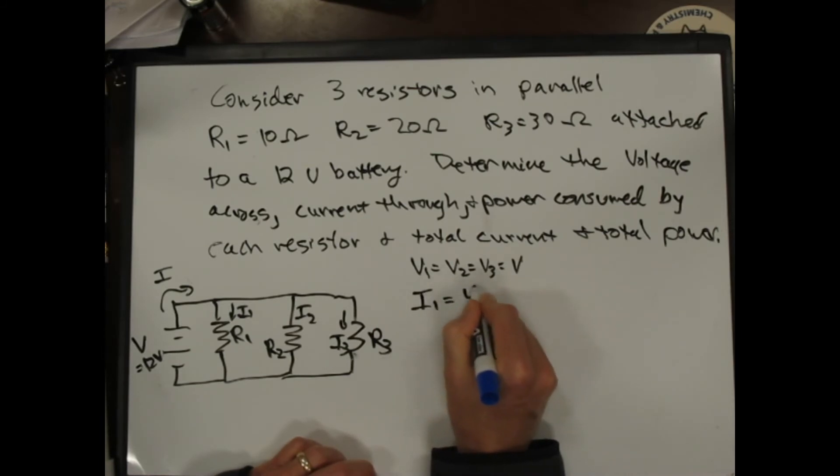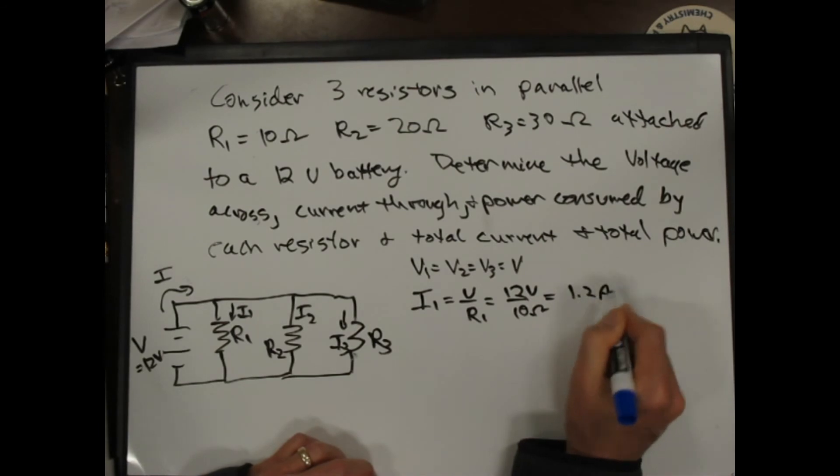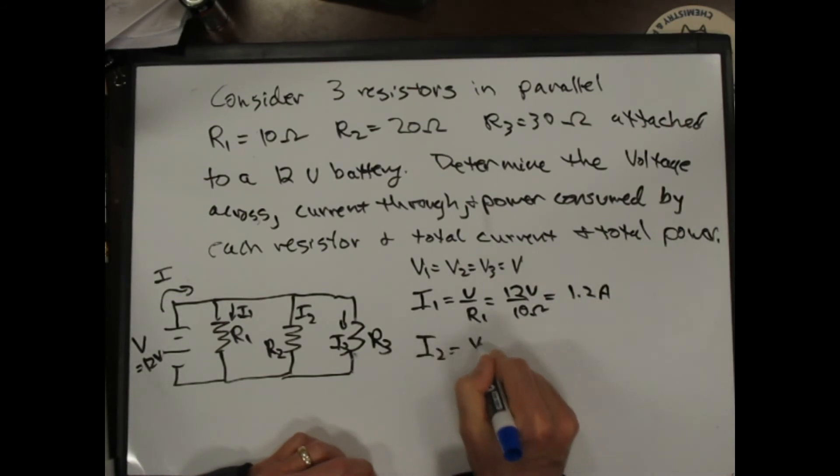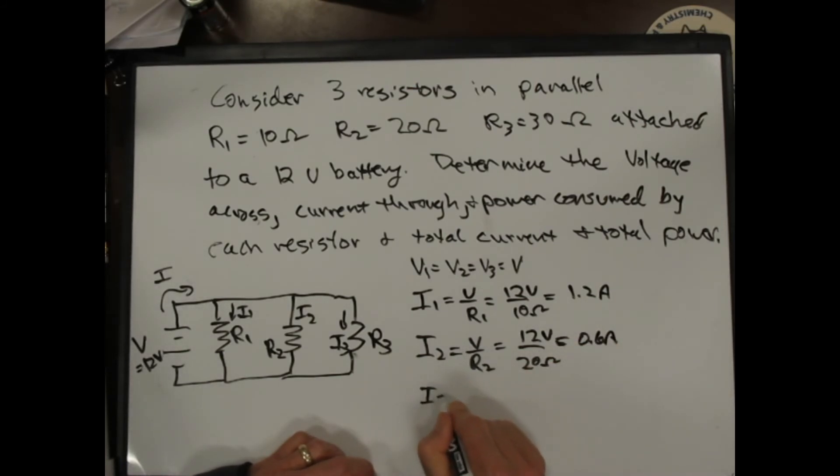I1 is equal to V over R1. That's 12 volts over 10 ohms, which is 1.2 amps. Similarly, I2 is equal to V over R2, which is 12 volts over 20 ohms, which is 0.6 amps. And finally, I3, which is V over R3, is 12 volts over 30 ohms, which is 0.4 amps.